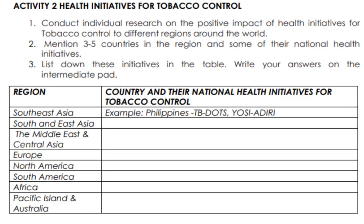Activity 2: Health Initiatives for Tobacco Control. Conduct individual research on the positive impact of health initiatives for tobacco control in different regions around the world. Mention 3 to 5 countries in the region and some of their national health initiatives. List down these initiatives in the table and write your answers on the intermediate pad.